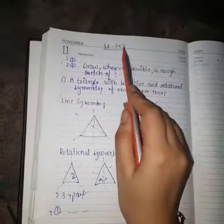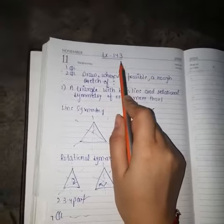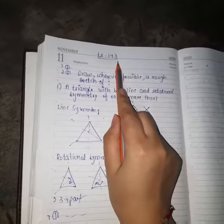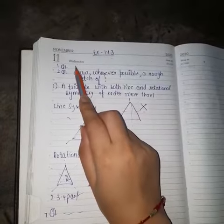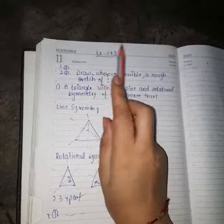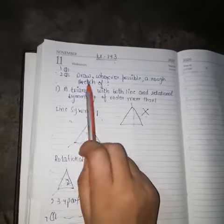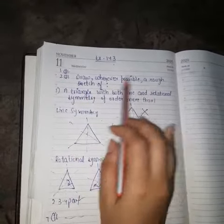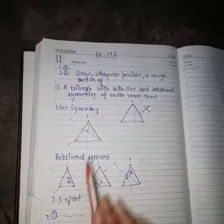Good morning students. Today we will discuss Chapter 14.3, which is our PA2 last unit and last chapter. The first sum is a normal sum, not an MCQ type. Second, draw wherever possible a rough sketch. I will tell you the first, second, third, and fourth parts.